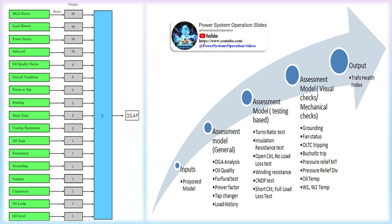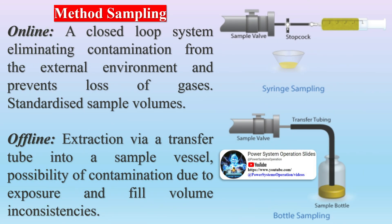Method sampling — online: a closed-loop system eliminating contamination from the external environment and prevents loss of gases, with standardized sample volumes. Offline: extraction via a transfer tube into a sample vessel, with possibility of contamination due to exposure and fill volume inconsistencies.